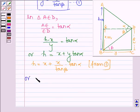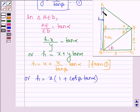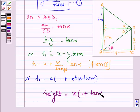Or we have H is equal to taking x common 1 plus cot beta into tan alpha. Thus, the height of the opposite house is equal to x into 1 plus tan alpha into cot beta.